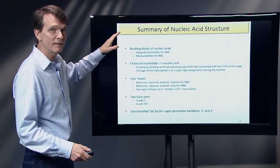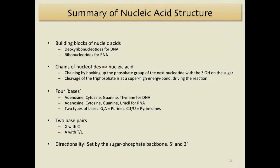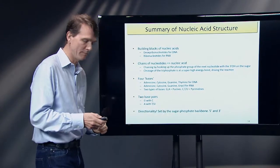A quick summary of nucleic acids: the building blocks are deoxyribonucleotides for DNA and ribonucleotides for RNA. The chains are made by hooking up the phosphate group of the next nucleotide with the 3-prime hydroxyl on the previous sugar, driven by the very high energy released when that bond is made. We have four bases — adenosine, cytosine, guanine, thymine for DNA; uracil replaces thymine for RNA. These bases are classified into two types: purines have two rings and are the bigger bases, while pyrimidines have a single ring and are smaller. G always pairs with C, A always pairs with T or U, and the directionality of a single strand is set by the sugar-phosphate backbone.